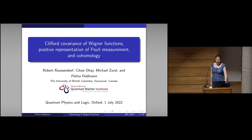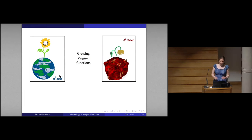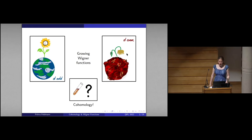I will tell you about a recent preprint by Robert, Gihan, Michael, and me, titled 'Clifford Covariance of Wigner Functions, Positive Representation of Pauli Measurements and Cohomology.' In the case of qudits with an odd number of internal states, Wigner functions behave very well. However, for qudits with an even number D of internal states, they don't thrive. The goal of this work is to analyze the difference between these two environments, and we find that it is cohomological.